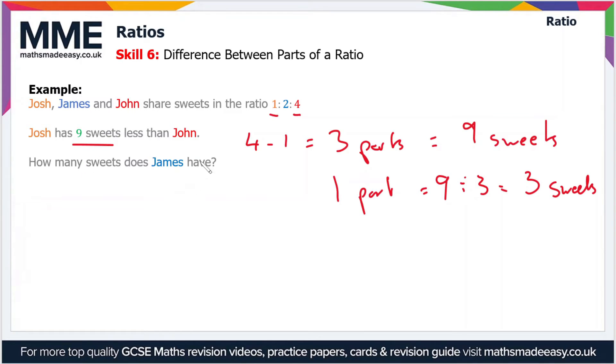Because James receives 2 parts, we just multiply 2 parts by the value of one part, which is 3 sweets. So 2 × 3 = 6 sweets. James receives 6 sweets.